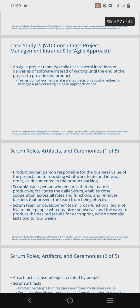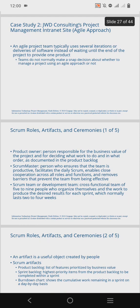Now let's talk about the Scrum roles, artifacts, and ceremonies. A product owner is a person responsible for the business value of a project. The person also decides what work is to be done and in what order, as documented in the product backlog — a prioritized list of features that have to be implemented as part of a project or product development.